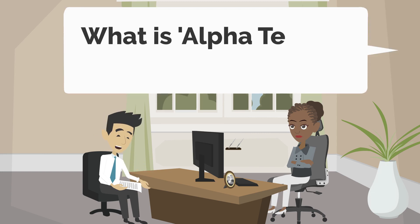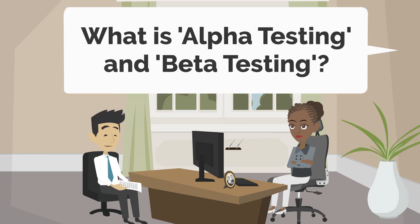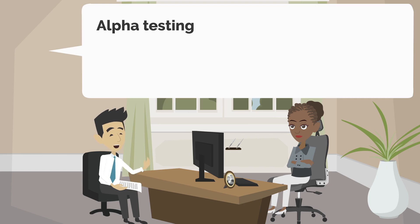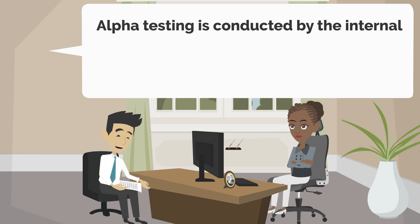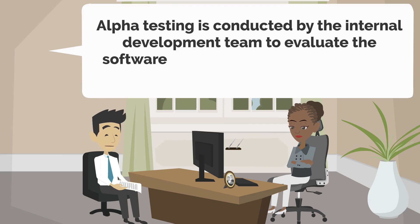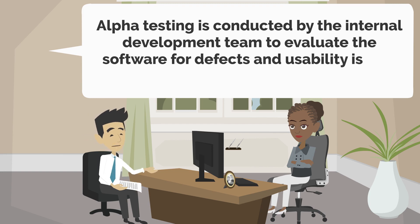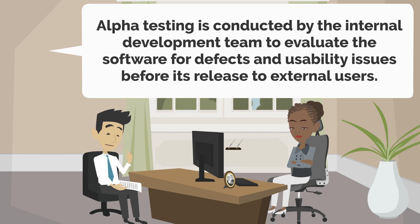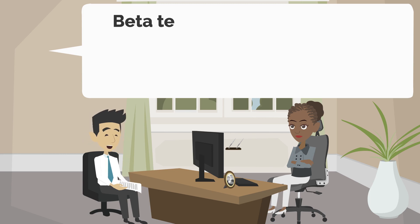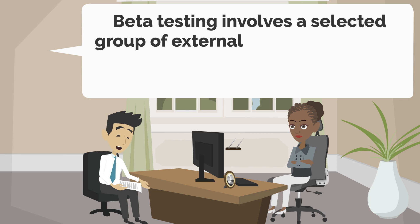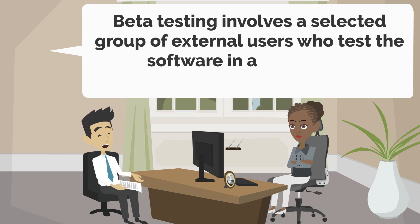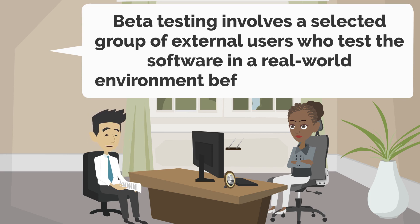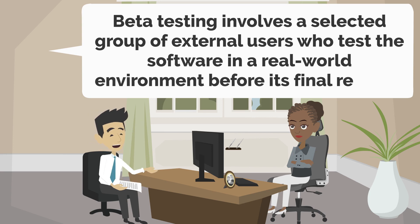What is alpha testing and beta testing? Alpha testing is conducted by the internal development team to evaluate the software for defects and usability issues before its release to external users. Beta testing involves a selected group of external users who test the software in a real-world environment before its final release.